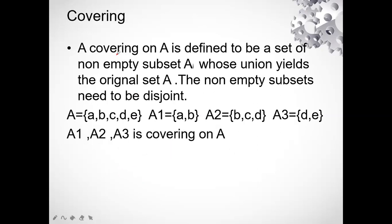Next one is covering. What is this covering? Covering is whenever there is a covering on A, a covering on A is defined to be a set of non-empty subsets Ai, whose union leads the original set A. The non-empty subsets need not be disjoint. That means the non-empty subsets have disjoint and this particular union will give you again the value of A. A1 union A2 union A3, you'll get the value of set A only, which will be A, B, C, D and E. So this is what we are going to get. So that is called as A1, A2, A3 is covering on A.